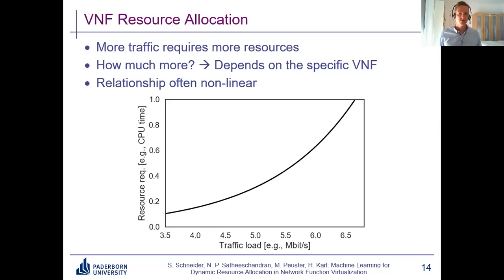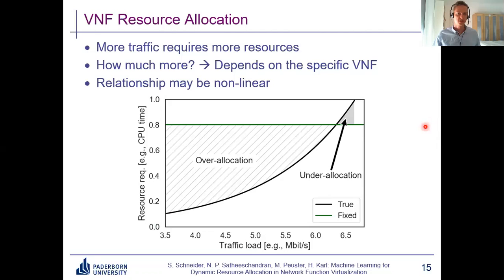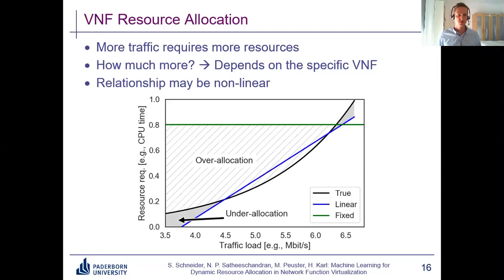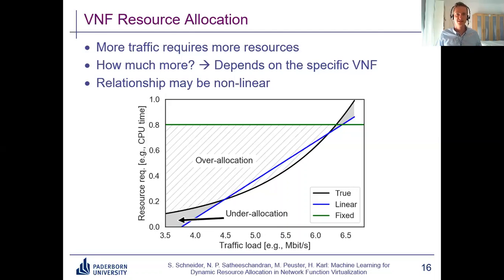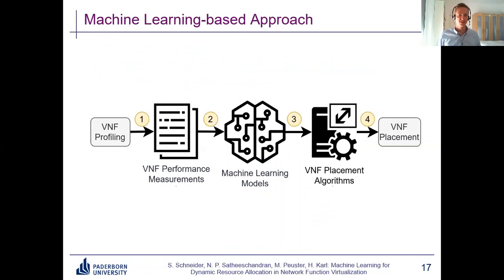If we do fixed resource allocation, as discussed earlier, this leads to drastic over or under allocation. A linear approximation of the true resource requirements is a much better fit and much closer to what we really need, but it's not perfect — there are still areas of under or over allocation. Can we do better than this linear approximation? Yes, we can, and this is where machine learning comes into play. In our paper, we propose a machine learning based approach with four different steps.